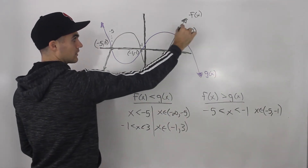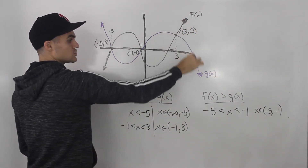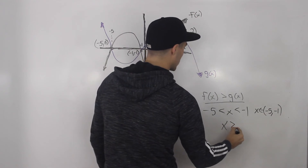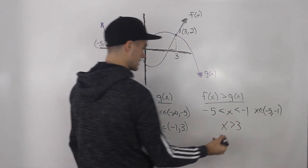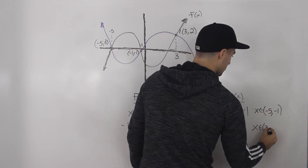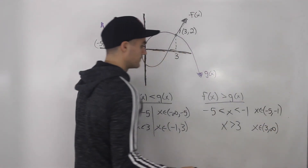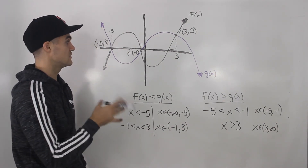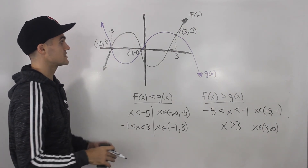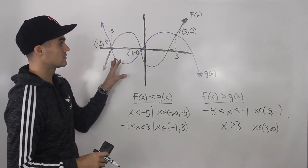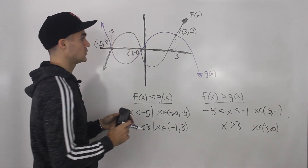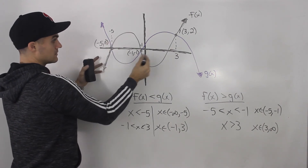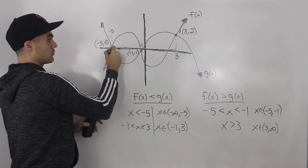In the final interval, f of x is always going to be greater than g of x. So when x is greater than three, or in set notation, x is an element from three to positive infinity, that's for f of x greater than g of x. Those are your final answers. That's how you look at it visually — if they give you two graphs, you basically have to see when one function is above the other, and you look at it in intervals dictated by the x-values of the points of intersection.